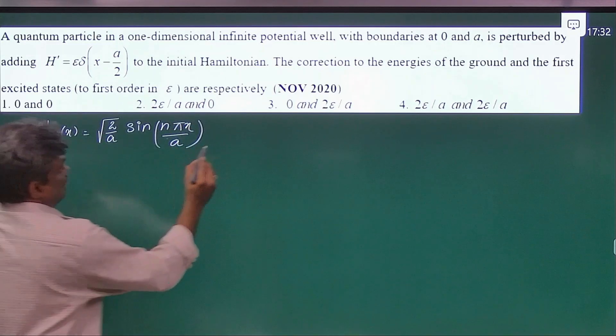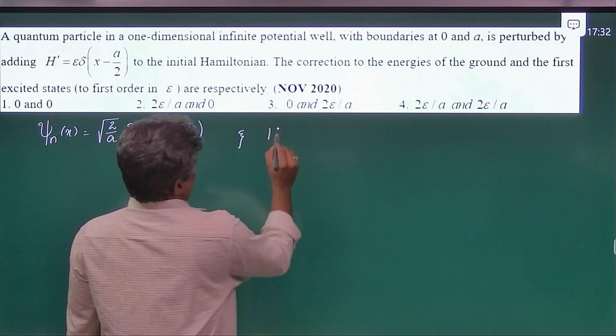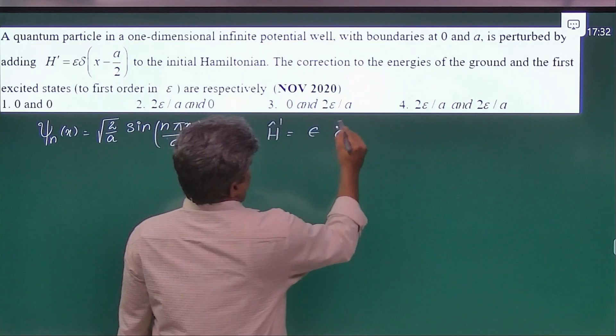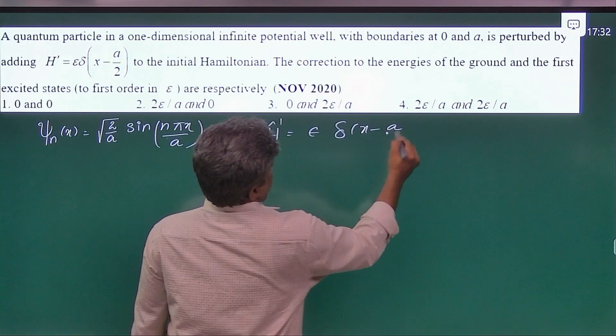Now take the perturbation also. This is the perturbation of the Hamiltonian epsilon delta of x minus a by 2.